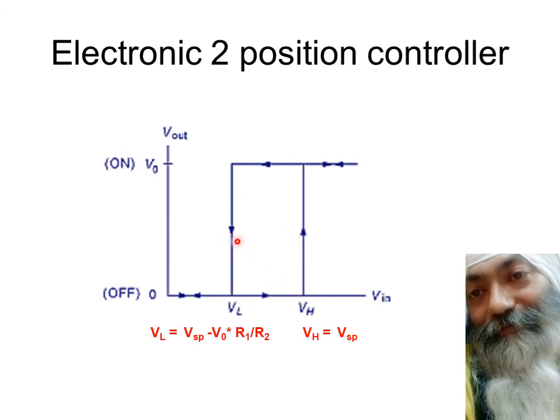So this two degree gap, this two degree gap is what we call it as a neutral zone. It is deliberately introduced over here so that we do not have two position control.